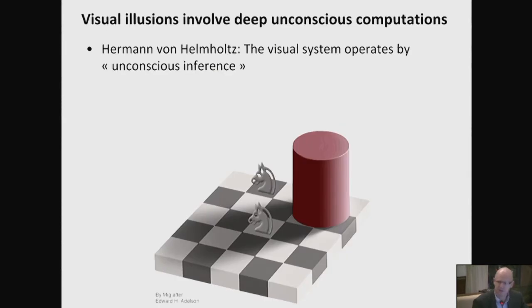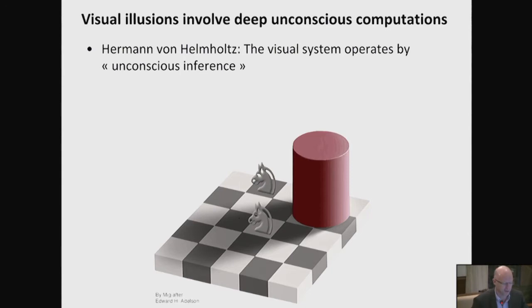I want to start with a very simple illusion. Many of you know this work by Ted Adelson. You don't even see that there is an illusion the first time you're exposed to it. But if your attention is drawn to these two cells and you mask the rest, you can see they are the same exact luminance — identical. Yet when you see the whole scene, it's impossible not to see that one is a dark square and one is a light square. There is a dark area which is interpreted as a shadow, compatible with the presence of a cylinder and light coming from the right. So the visual system is subtracting the shadow.